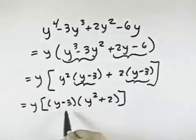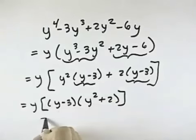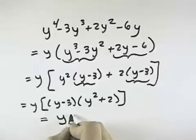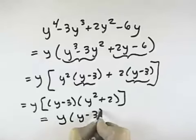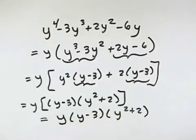Looking at each of these, there are two terms each, but neither one is the difference of squares, and neither one is the sum or difference of cubes. So that means our first factor is y, our second factor is y minus 3, and our third factor is y squared plus 2, none of which can be broken down any further.